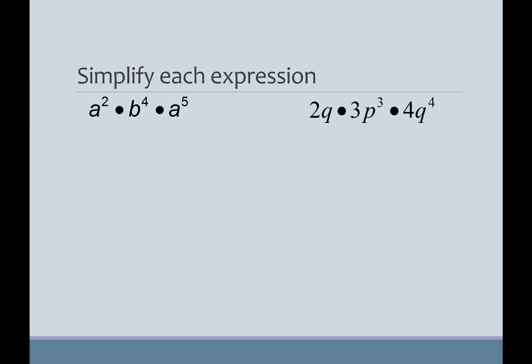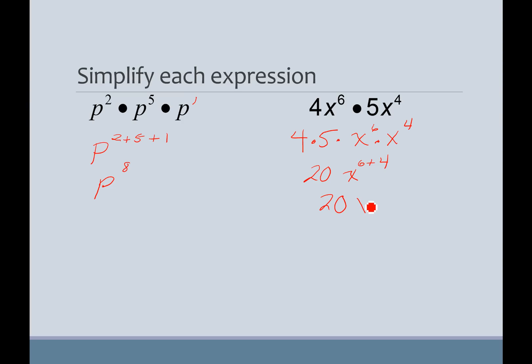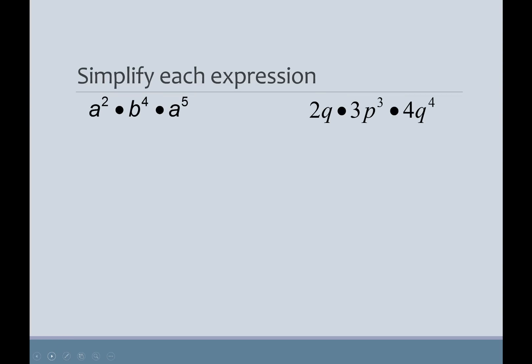And notice those aren't taken to a power, so that's why we multiply them. 4 times 5 is 20. And then x to the sixth times x to the fourth is x to the sixth plus 4, which is going to give us 20x to the tenth. We're done because we don't know what x is.